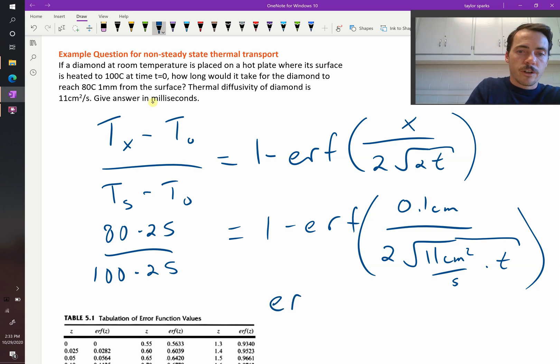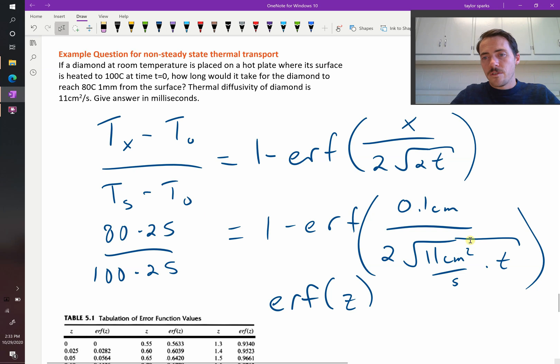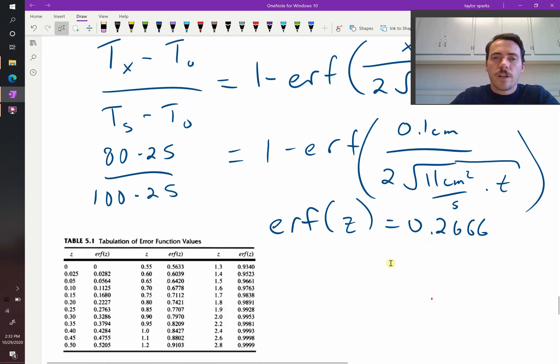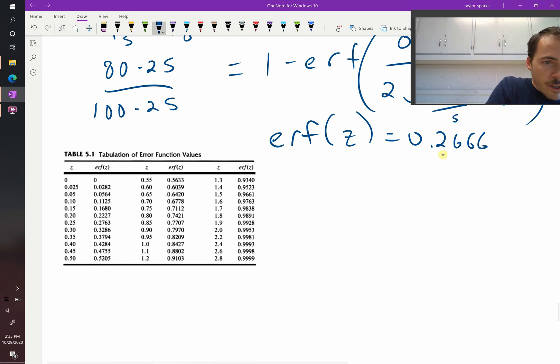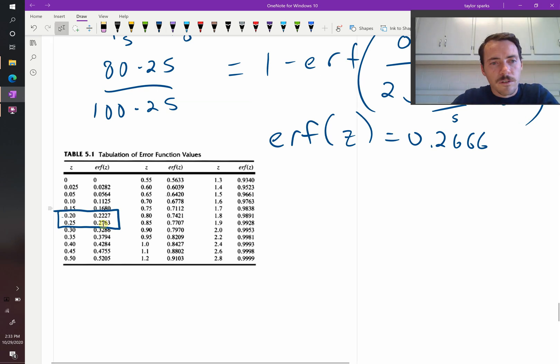Okay, therefore the error function of, we'll just call it Z, everything inside this parentheses here, we'll just call it Z. Z, that's going to be equal to 0.2666. So now we can use our error function table to figure out what the value of Z should be if the value of error function of Z is 0.2666. Well, right over here we notice that it's going to be between 0.2 and 0.25 because 0.25 is larger than that, 0.2 is less, so what value do we use? We have to do a linear interpolation.